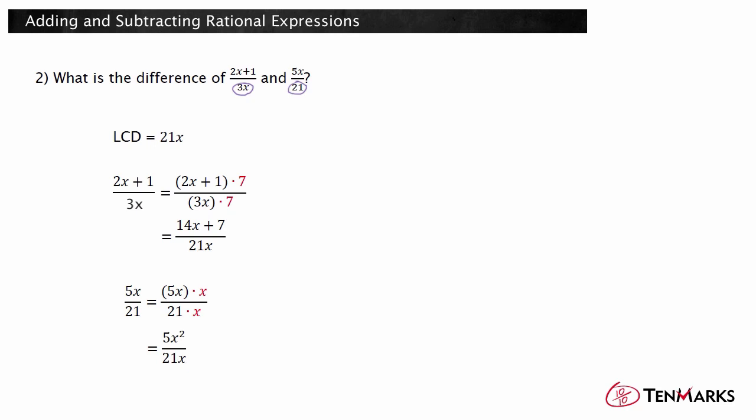Now you can subtract. Write the LCD as the denominator of the difference. And subtract the numerators to get the quantity negative 5x squared plus 14x plus 7.